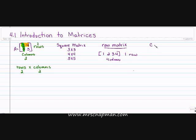Then they have what they call a column matrix. This is where you have one column.